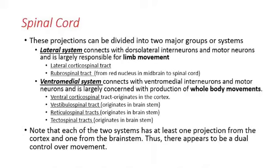There appears to be dual control over movement in the motor system, similar to the dual sensory pathways we've seen in sensory systems. The lateral system has one cortical tract and one brain stem tract — the rubrospinal tract. The ventromedial system has one cortical tract and three brain stem tracts. That gives you a picture of how the motor system is organized overall.